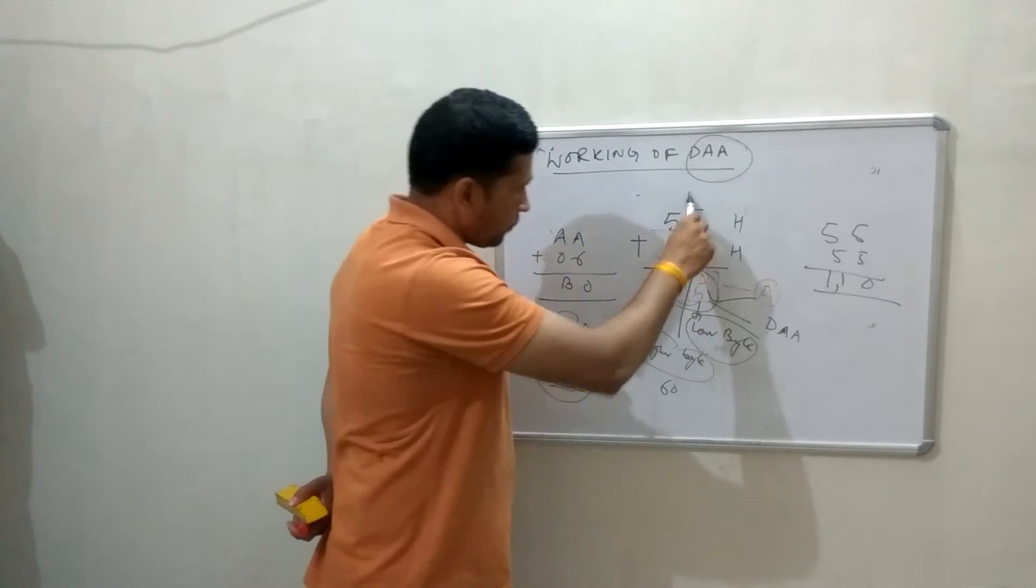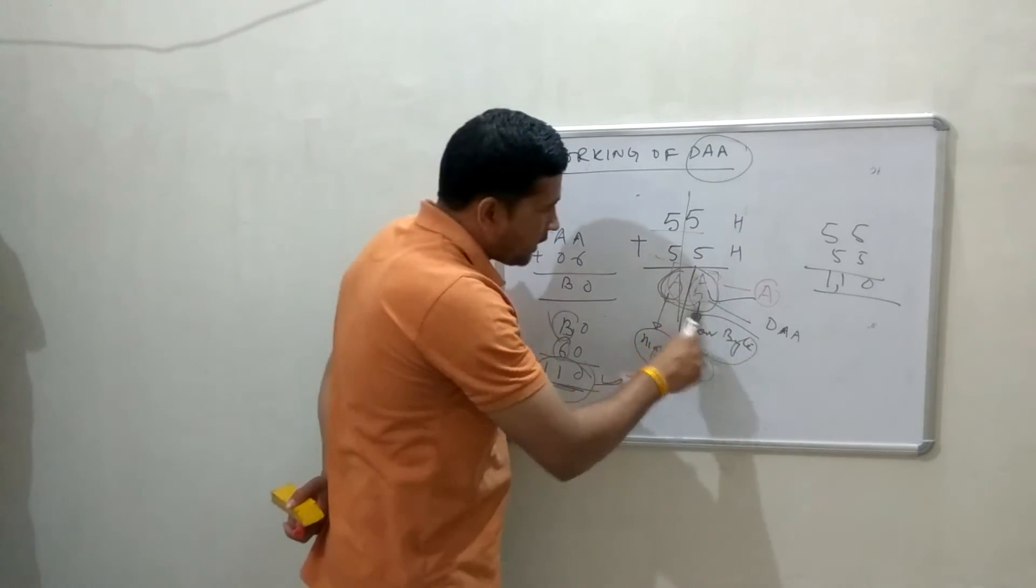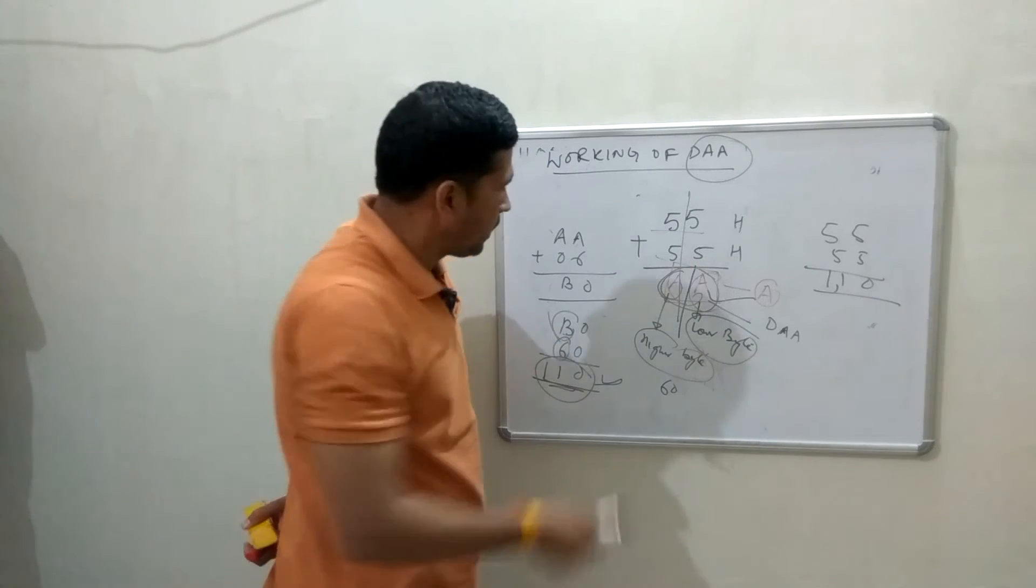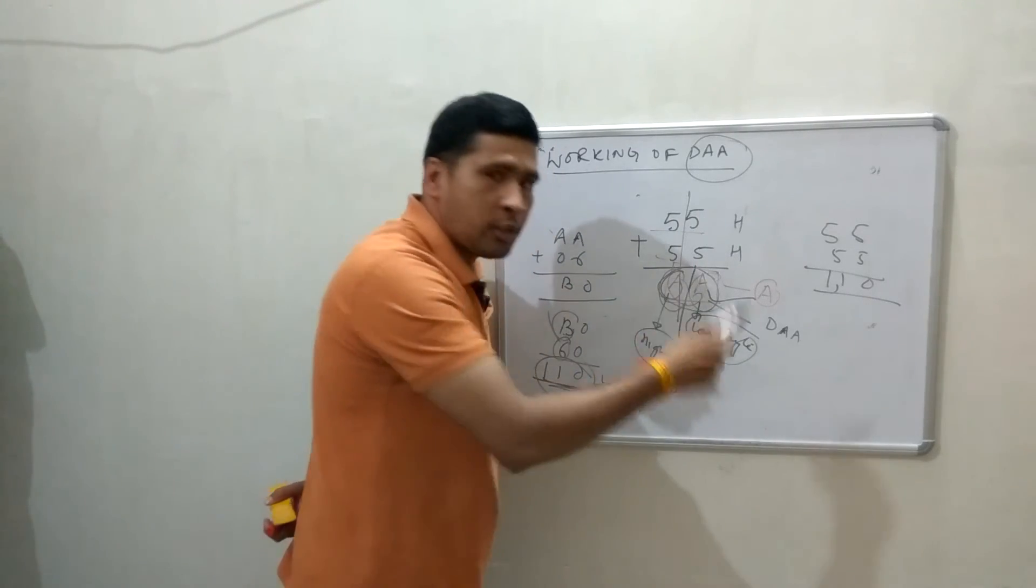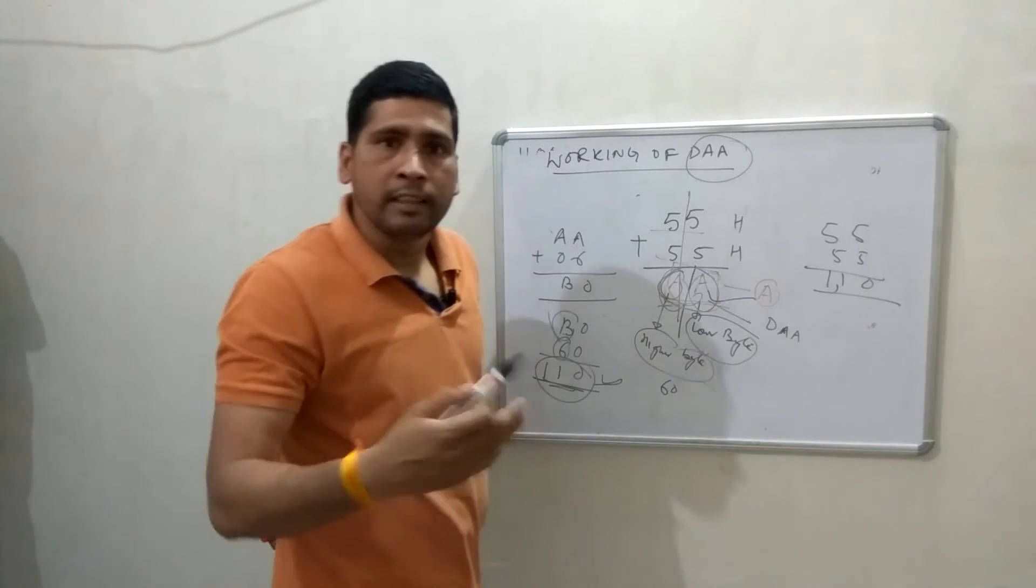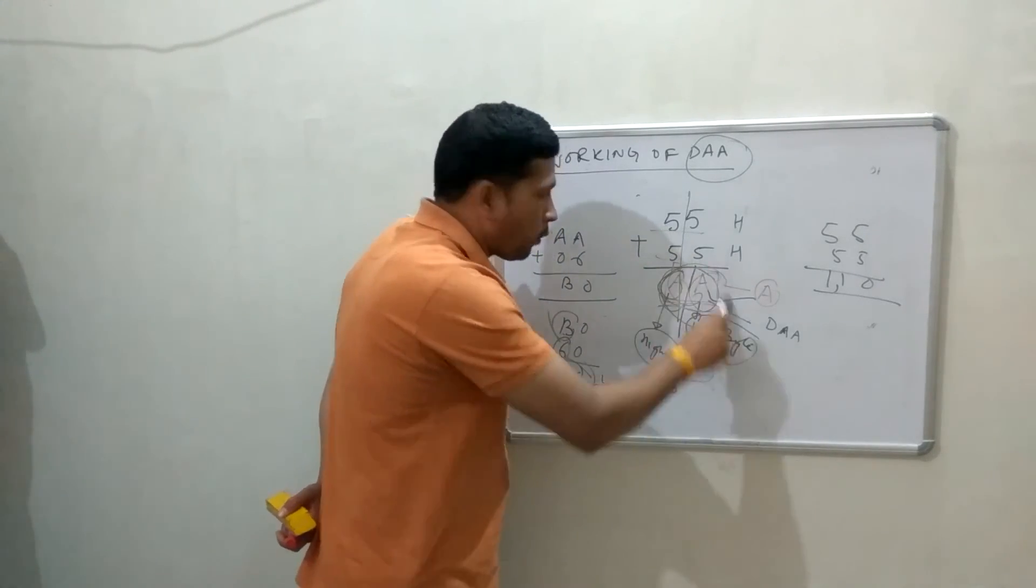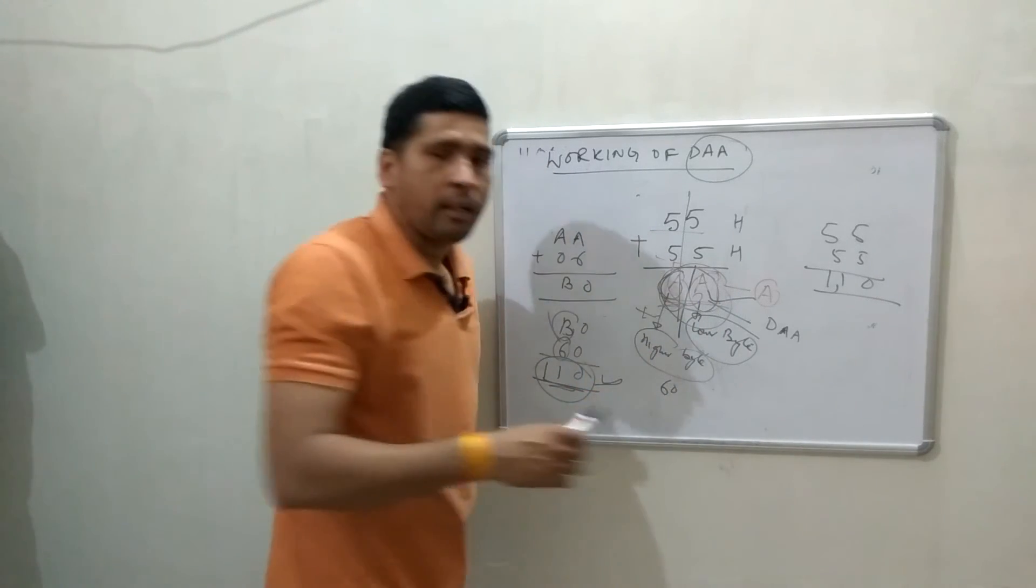Firstly, it checks lower byte, then checks higher byte. If lower byte is greater than 9, add 06. If higher byte is greater than 9, add 60. If both are greater than 9, add 66. If both is lower than 9, then you have to add nothing.